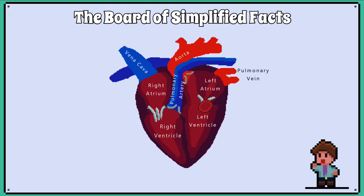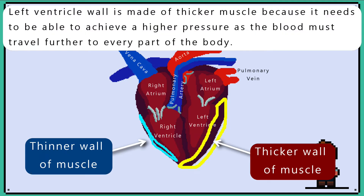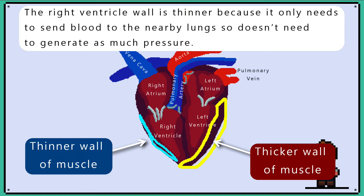The left atrium walls then contract to force blood into the left ventricle. The left ventricle walls will then contract to force blood up the aorta to the rest of the body. Please note that the left ventricle walls are much thicker than the right ventricle walls. This is because the left ventricle must apply more pressure to the blood, as the blood must travel further to the far regions of the body like the head and limbs. The right ventricle only needs to pump blood to the lungs, so it does not need to produce as much pressure, hence the thinner walls.